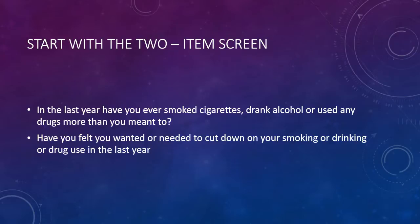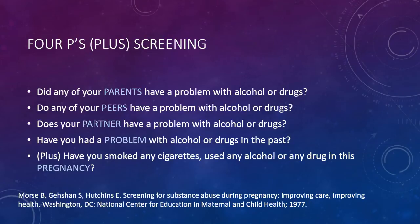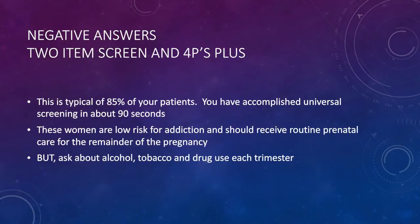If she answers no to both questions on the two-item screen — stating she does not use alcohol, tobacco, or drugs — she is at low risk and you proceed to the 4Ps Plus screening. The 4Ps Plus is five simple questions: Did any of your parents have a problem with alcohol or drugs? Did any of your peers? Does your partner? Have you had a problem in the past? And the plus: Have you smoked, used alcohol, or any drug during this pregnancy? No answers to all of these — typical of about 85% of patients — means universal screening is accomplished in about 90 seconds, and these women should receive routine prenatal care. But ask about alcohol, tobacco, and drug use each trimester.